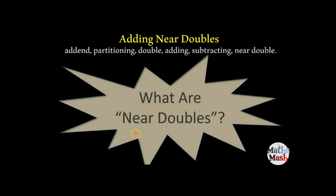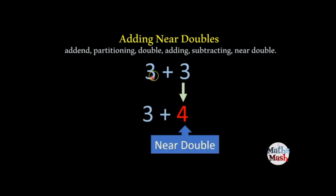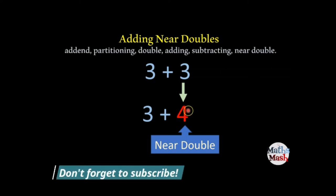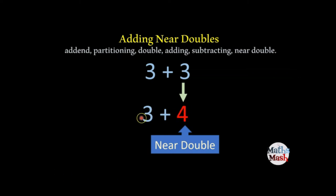Alright, so what are near doubles then? Well, as I said 3 plus 3 is basically doubling. But a near double would be if we took this 3 and we changed it to 4. A near double of 3 could be 2 or it could be 4. It's almost the same as the number you started with here. It's close but it's not the same number.